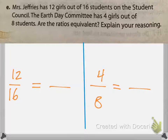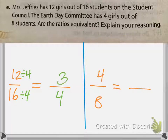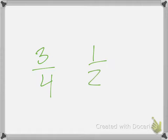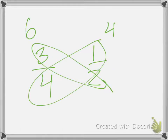The greatest common factor between 12 and 16 is 4 — 16 divided by 4 gives 4, and 12 divided by 4 gives 3. The greatest common factor between 4 and 8 is also 4 — 4 divided by 4 is 1, and 8 divided by 4 is 2. So we get three-fourths and one-half. Are these equivalent? They are not. Using butterfly math we get 6 and 4 — not equivalent fractions.